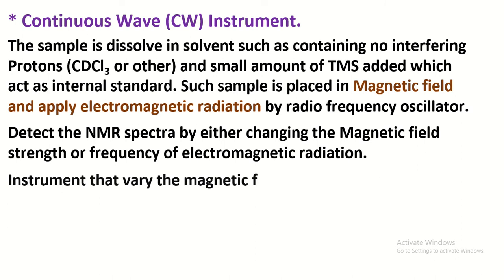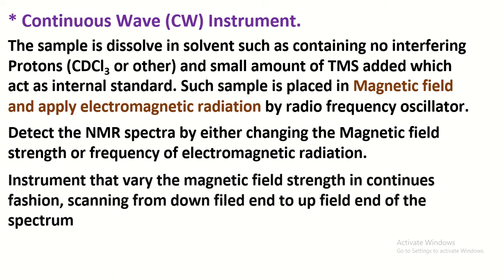Generally in continuous wave instrument, the magnetic field is varied in continuous fashion and scanning records the spectra from downfield end to upfield end of the spectrum. Such instruments are called continuous wave instrument.